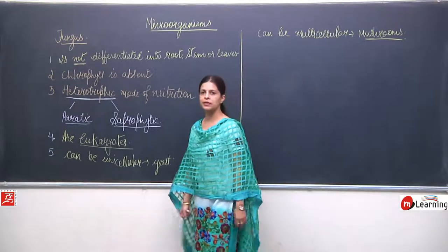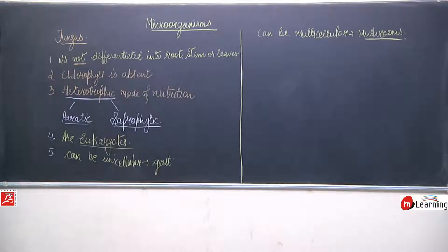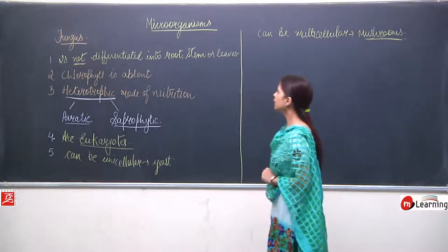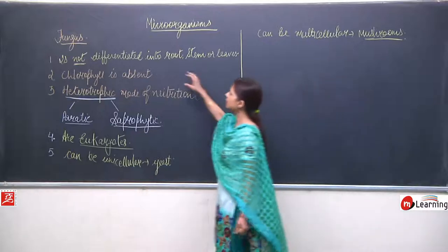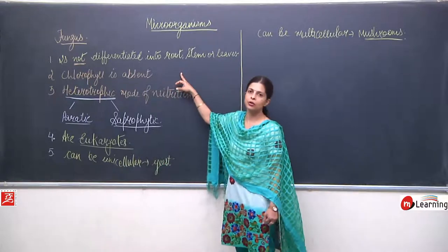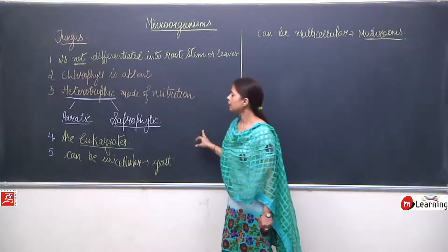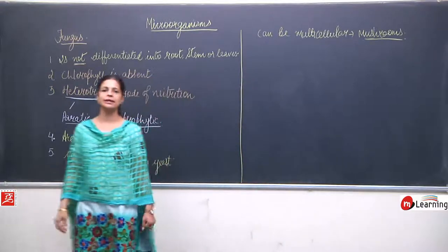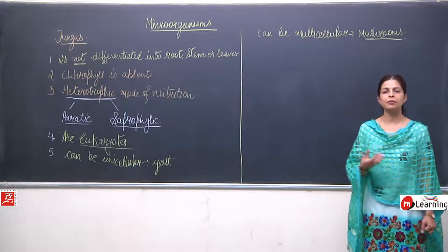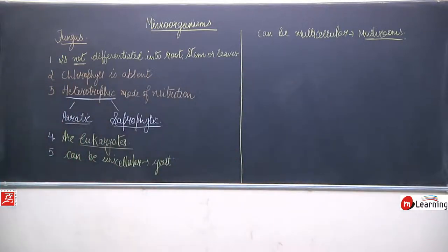These are the very basic characteristic features. First, the body is not differentiated into root, stem, or leaves. Chlorophyll is absent, which means they are not autotrophs — they are heterotrophs, and the mode of nutrition can be parasitic or saprophytic. They are eukaryotes and can be unicellular or multicellular.